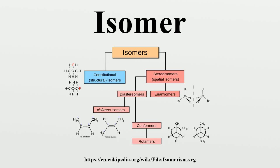Isomers do not necessarily share similar properties, unless they also have the same functional groups. There are many different classes of isomers, like positional isomers, cis/trans isomers, and enantiomers, etc.